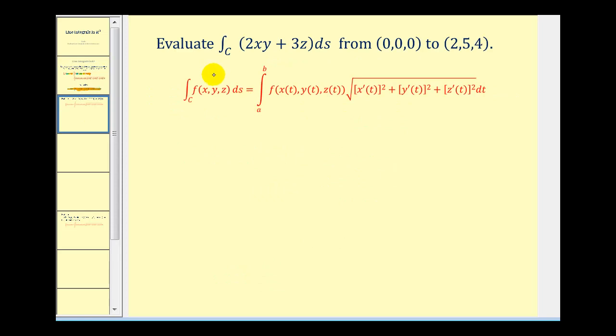Let's take a look at our first example. We want to integrate the following line integral from the point (0,0,0) to the point (2,5,4). So we first need to define r of t for this path. If we let the x component be 2t, the y component be 5t, and the z component be 4t, this would be the path of our line integral as long as t is on the closed interval from zero to one.